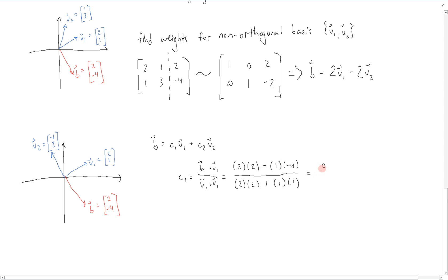which is equal to 0 over 5, which is equal to 0. C2 will be found analogously, B dot V2 over V2 dot V2. And this is equal to this, which is equal to negative 10 over 5. And that's equal to negative 2. So from here, just plugging things into this first equation, we have that B is equal to negative 2V2.